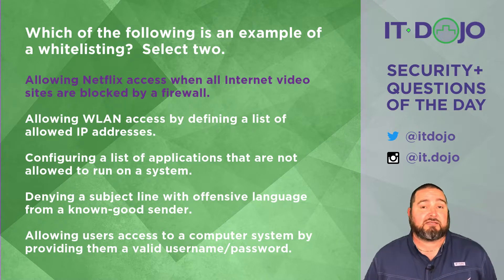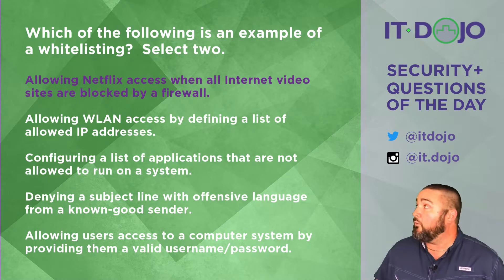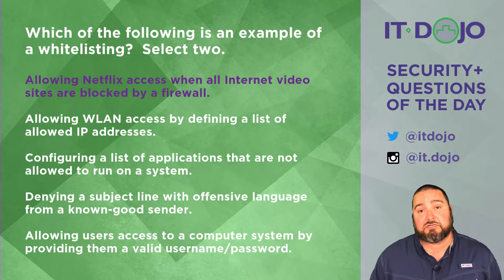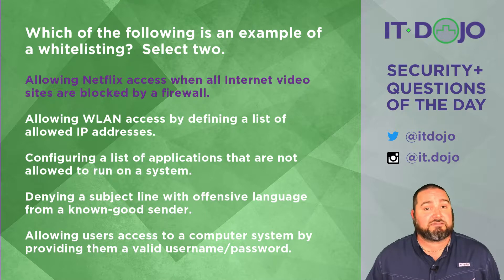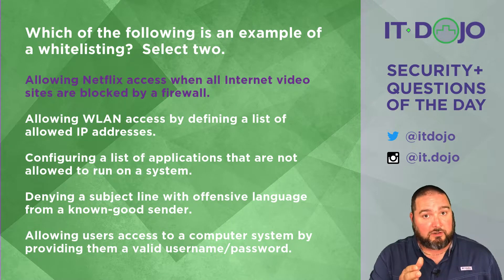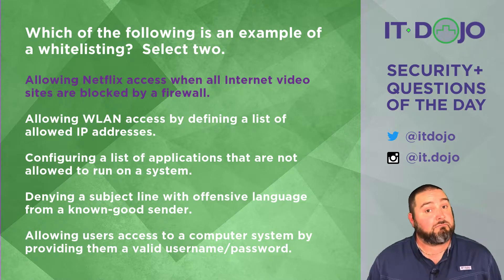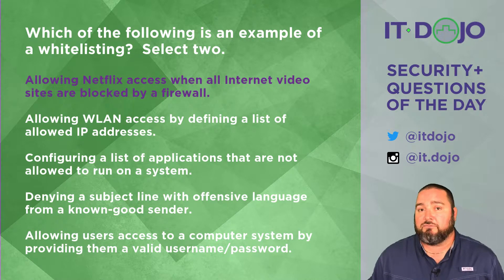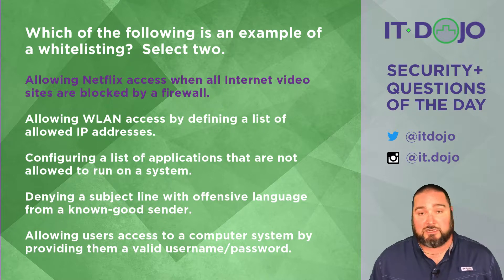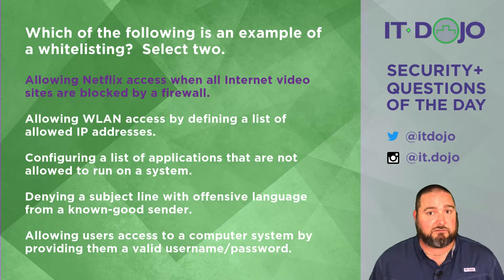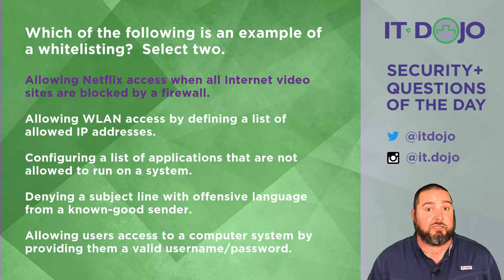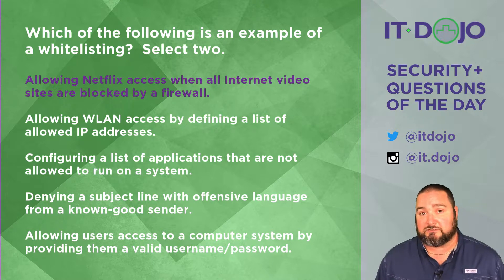The next answer choice says that you're going to allow wireless LAN access by defining a list of allowed IP addresses. While that may seem compelling, it is not the right answer. The reason is we don't control access to wireless LANs by IP address. Controlling access to wireless LANs can be done with MAC addresses, but not with IP addresses. Even though MAC address filtering is not part of the standard and not a great idea, it still exists — but any slightly motivated attacker is going to make short work of a MAC filter.